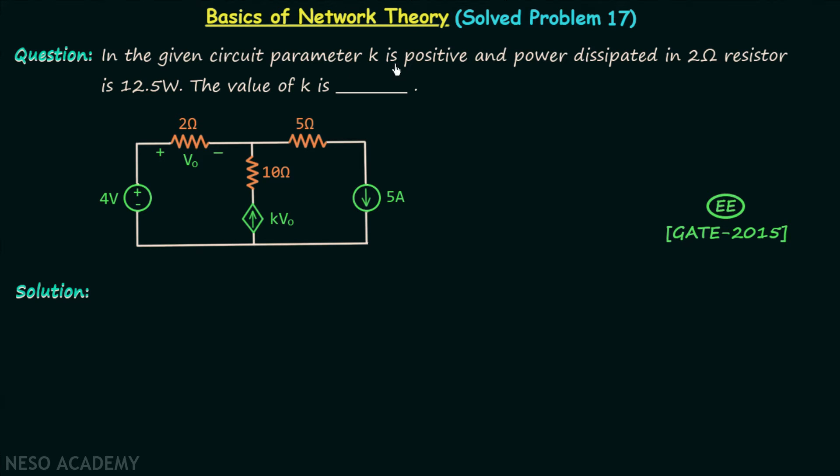In the given circuit, parameter k is positive and power dissipated in 2 ohm resistor is equal to 12.5 watts. The value of k is...